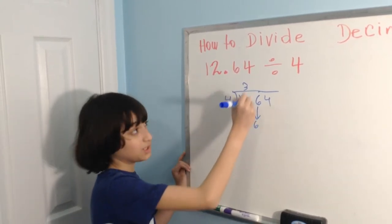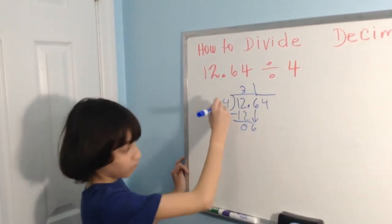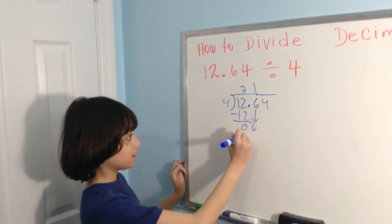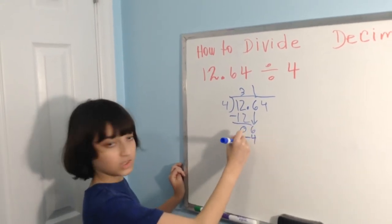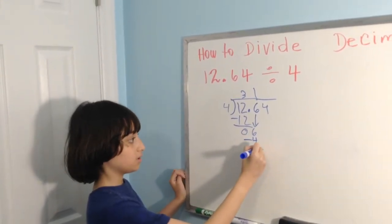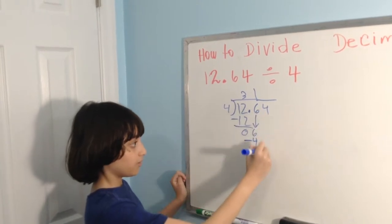4 into 6 one time. 4 times 1 is 4. 6 minus 4 is 2. 24.